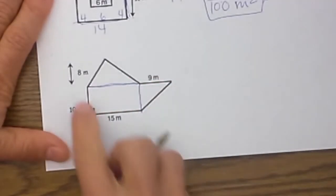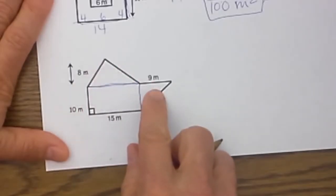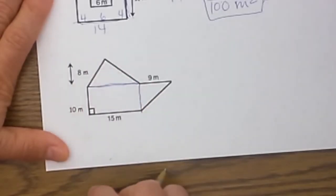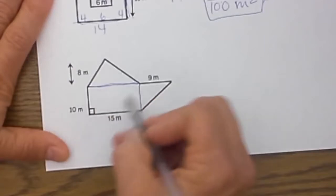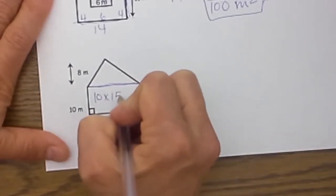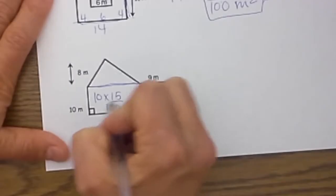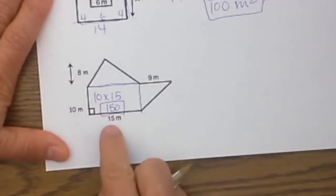I wanted to do one with a triangle. This one actually has two triangles. Let's see if we can figure this one out. The area of the rectangle is just 10 times 15, which is 150 square meters.